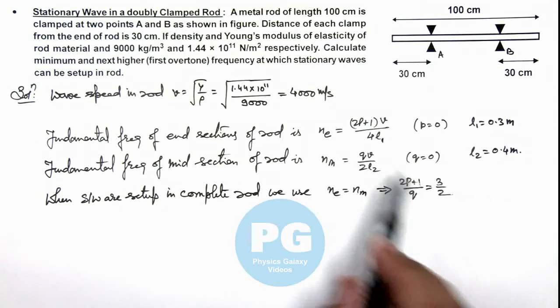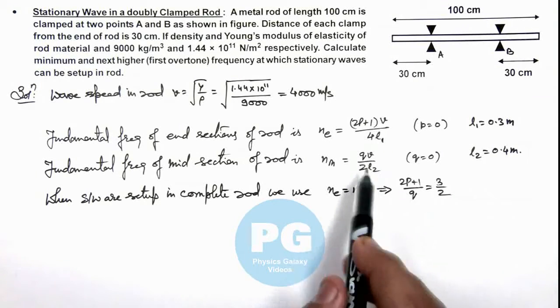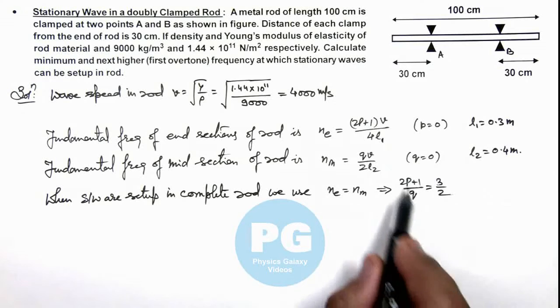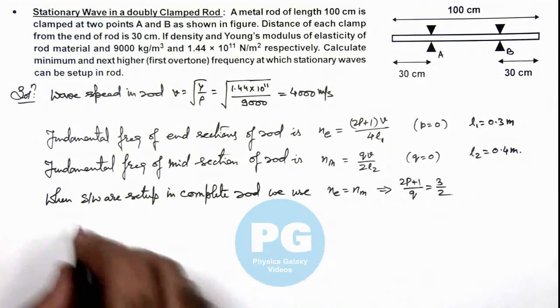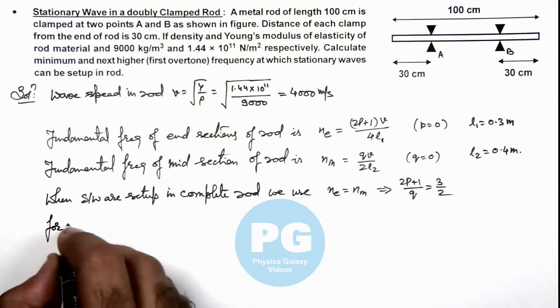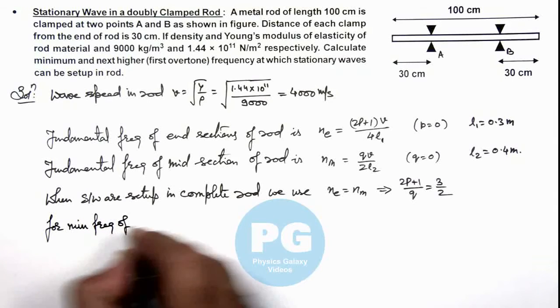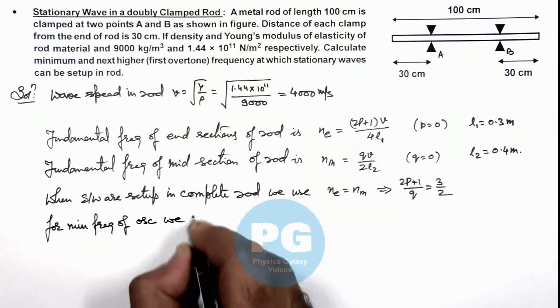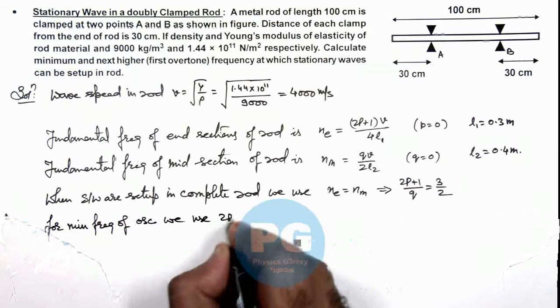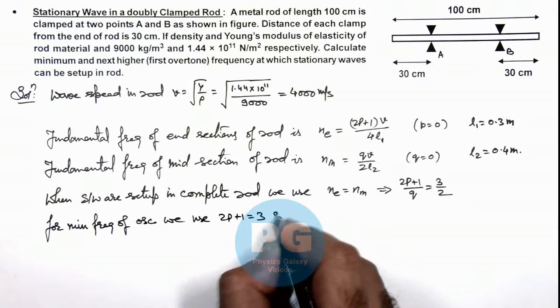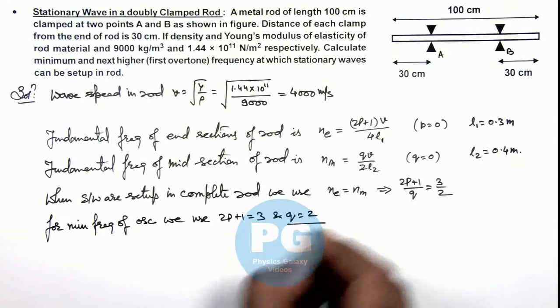On substituting the values of L_1, L_2, v gets cancelled out. And as p and q, here we can write for minimum frequency of oscillations, we use here 2p + 1 should be equal to 3, and q should be equal to 2.